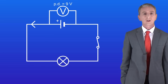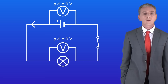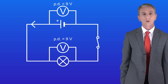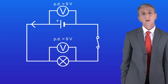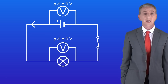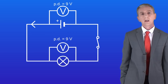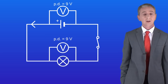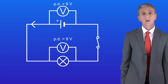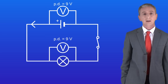We can also use a voltmeter to measure the potential difference across the lamp. The potential difference across the lamp is also 9 volts, so all of the electrical energy carried by the electric current is transferred to light energy and thermal energy in the lamp. Potential difference simply tells us how energy is transferred in an electrical circuit.